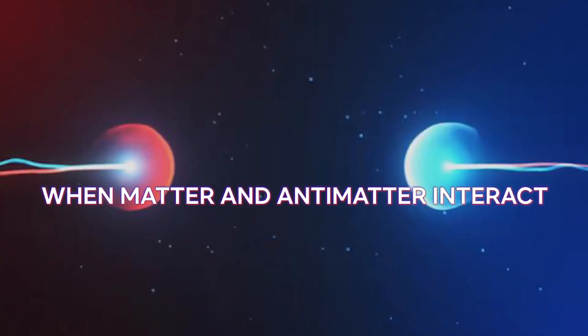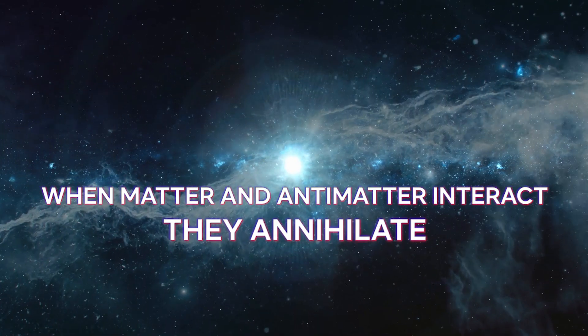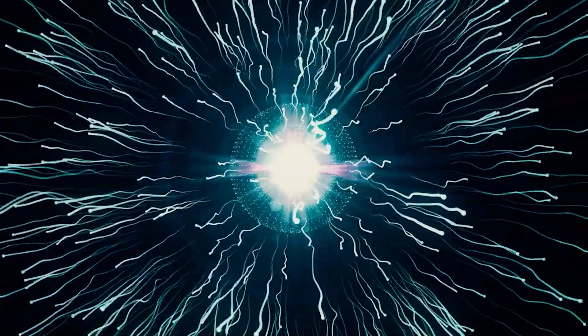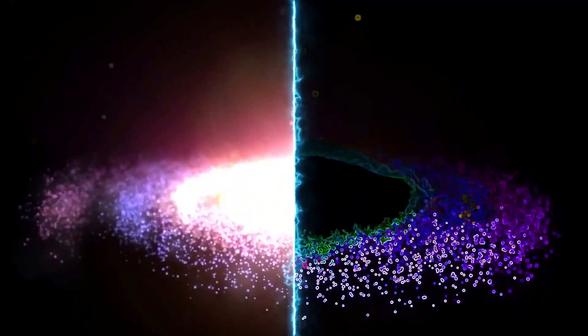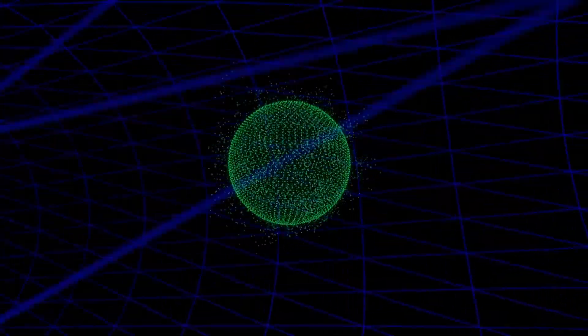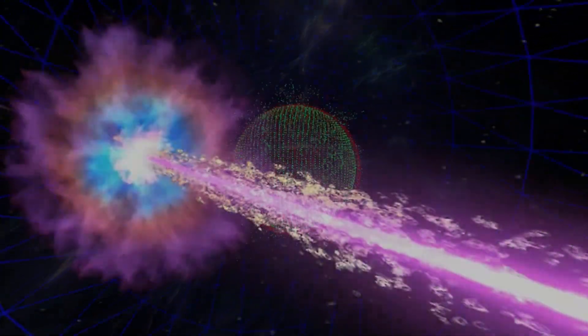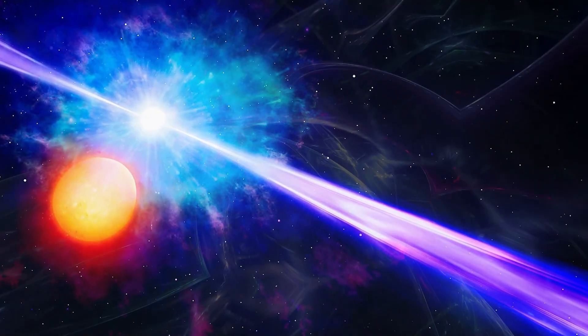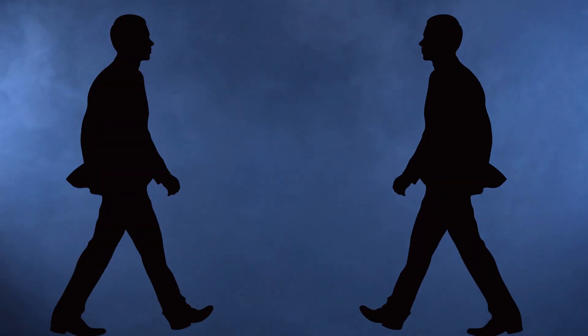When matter and antimatter interact, they annihilate, creating an explosion. For example, when a positron encounters an electron, both are annihilated, producing two X-ray energy photons. The scarcity of antimatter in the universe prevents constant bombardment with X-rays and gamma rays. If you met your anti-self, both of you would annihilate, releasing energy equivalent to 2,500 megatons.